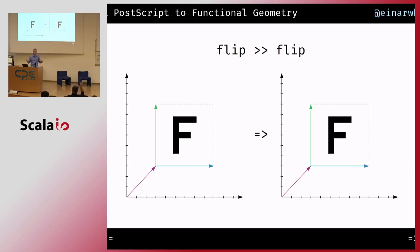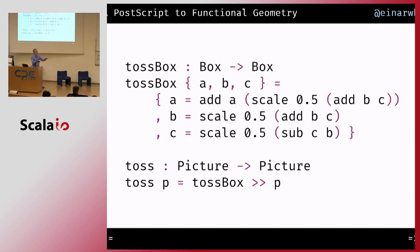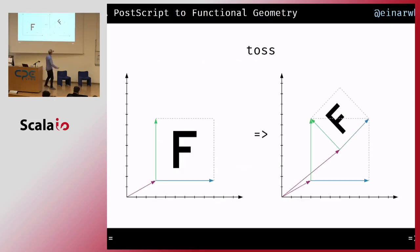I can only do flip two times before ending up where I started. The third simple transformation Henderson defines is something he calls rot45 — I like to call it toss because it looks like you're throwing something up into the air. It's a little more involved with vector arithmetic but nothing too difficult. I take the box transformation and compose it with my original picture.